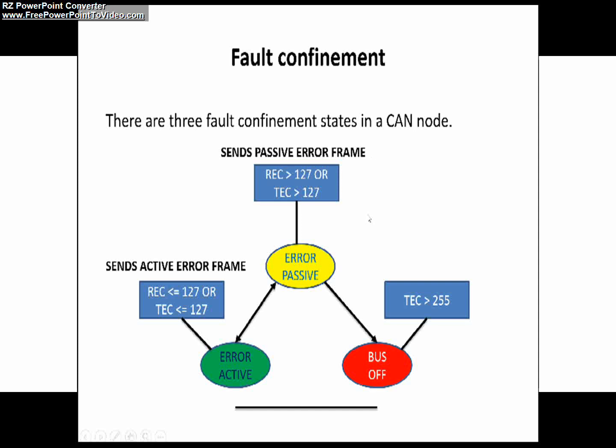Now, coming to the last state of a CAN node — that is Bus Off. Don't get confused with bus off here; shorting of CAN High and CAN Low is different, and this state is different. This is just the state of a node, not a real bus off meaning shorting the cable — we are not shorting any cable here. When the transmit error counter value is greater than 255, the CAN node will be in Bus Off state. You can see the same here.